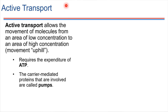There's another type of transport that's possible for when a cell needs to move substances up the concentration gradient, not down the concentration gradient. In this case, the cell would probably need to use something like active transport, where energy is involved in the transport process.